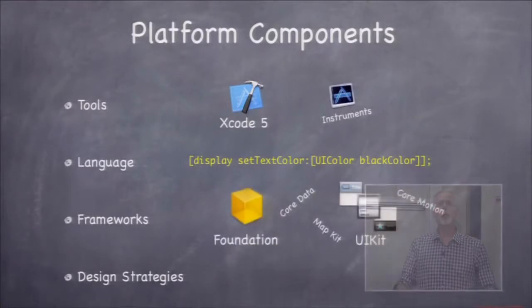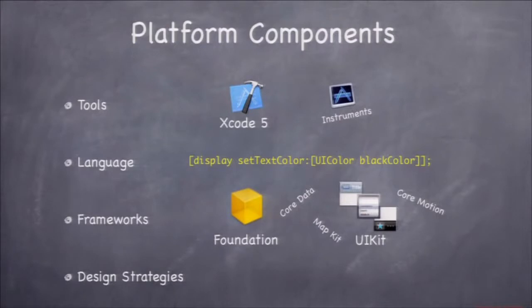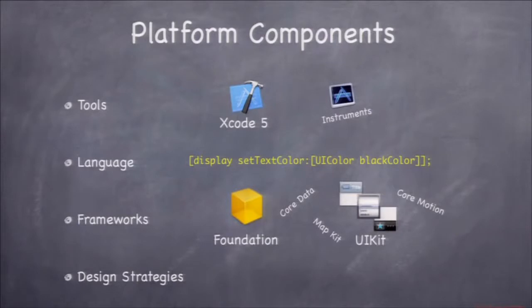Frameworks are how iOS groups all its objects into libraries. There are dozens of frameworks in iOS. The two main ones at the beginning are Foundation — that's where core services stuff like arrays and dictionaries lives — and UIKit, where buttons and sliders and UI elements are. There are many others: Core Data for the object-oriented database, Core Motion for the gyro and accelerometer, Map Kit for maps, and dozens more. We'll cover as many as we can in ten weeks.